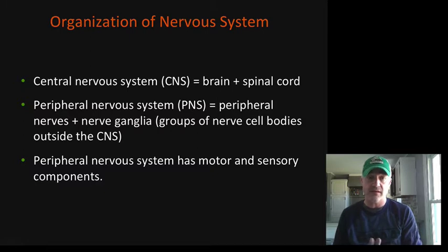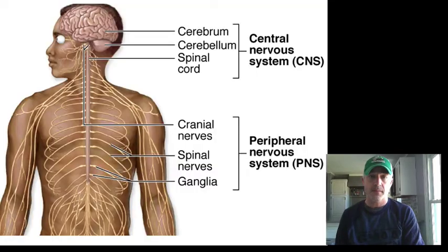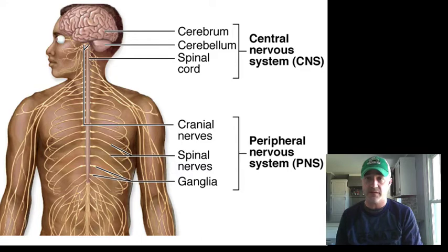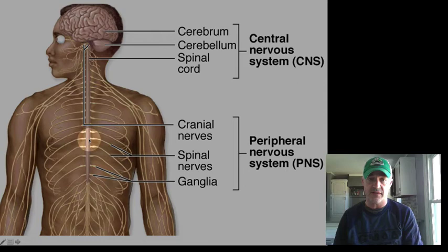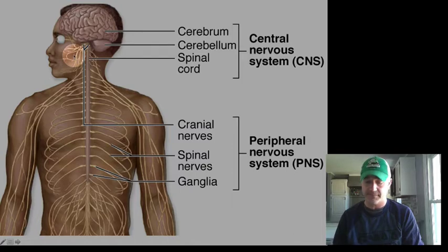In the peripheral components, you generally are going to have motor and sensory parts. The central nervous system — brain and spinal cord — runs down the center, where the peripheral nervous system includes spinal nerves as well as cranial nerves found up in the head.